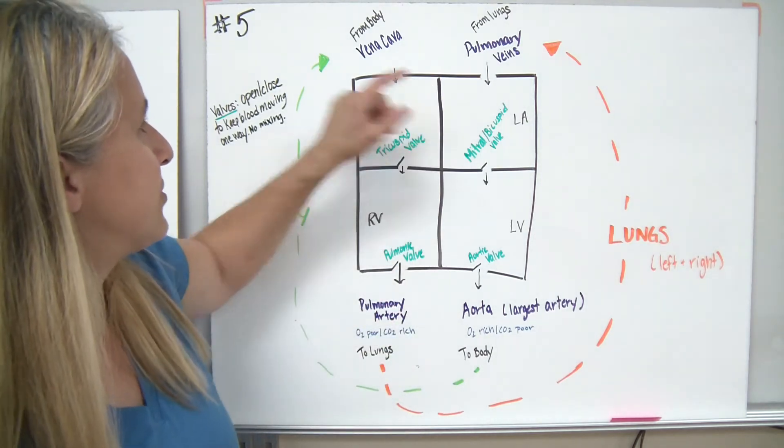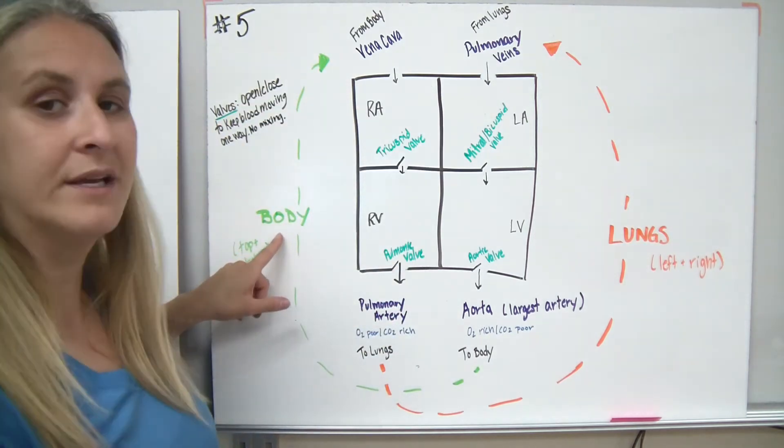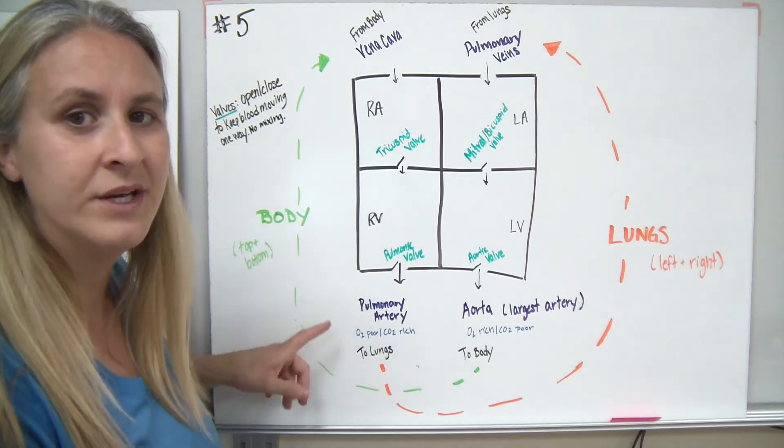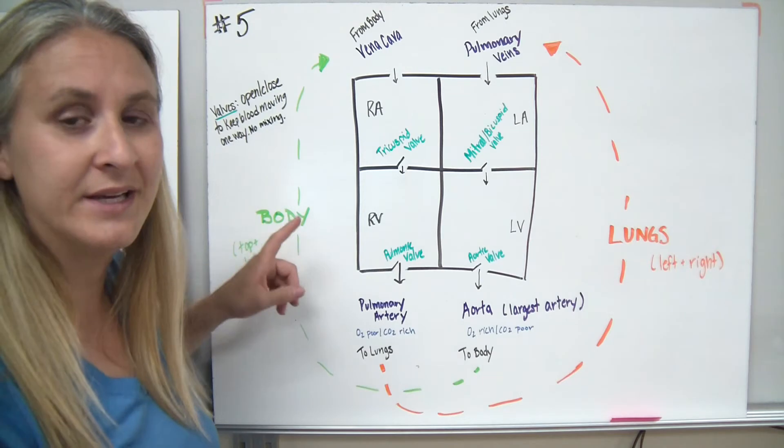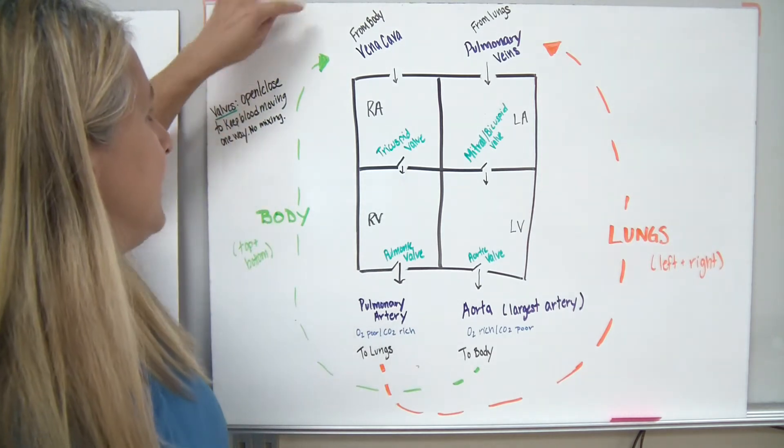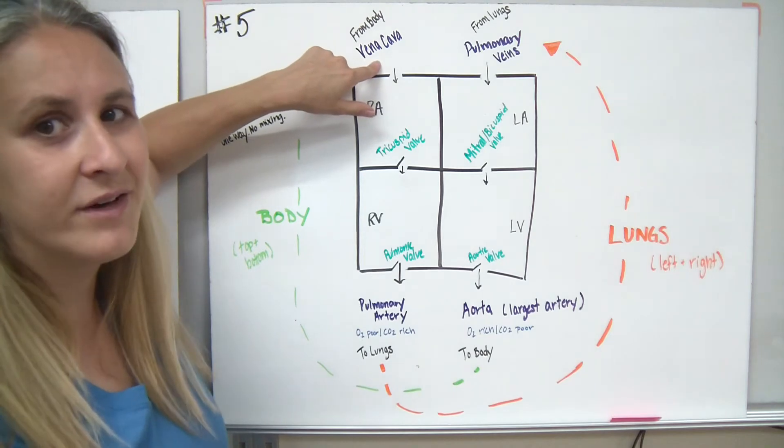So if we were to start with our body, remember our body uses the oxygen, drops off carbon dioxide into it. So when the blood comes from the body, it's going to come from your lower body, and it's going to drain from your upper body into what are called the vena cava.